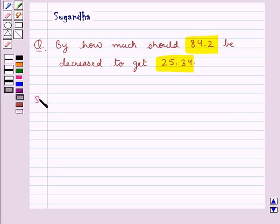Let's move on to the solution now. To find out by how much should 84.2 be decreased to get the result as 25.34, we need to subtract 25.34 from 84.2.